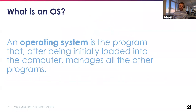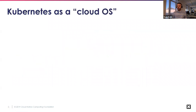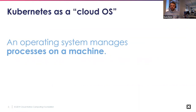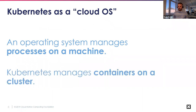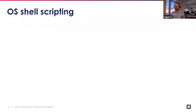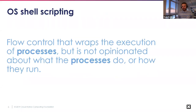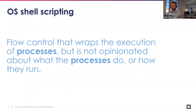Essentially, an operating system is the program that, after initially being loaded, manages all of the other programs. An operating system manages processes on a single machine, and Kubernetes manages containers in a cluster. So without stretching the analogy too much, we can think about Kubernetes as a cloud operating system. We've been using OS shell scripting — Bash, PowerShell — forever, and essentially shell scripting is flow control that wraps the execution of processes.